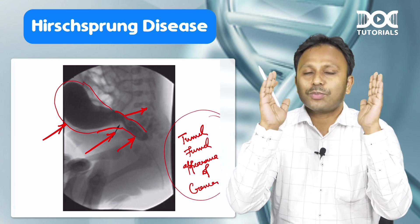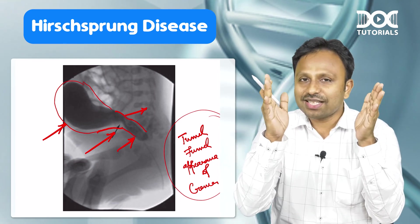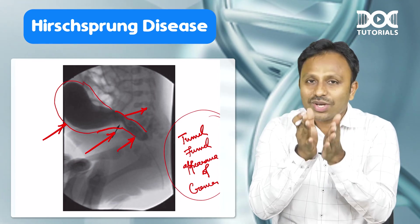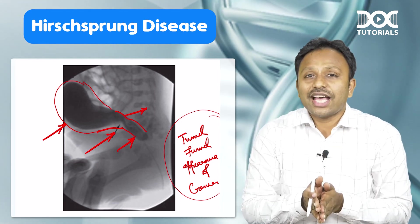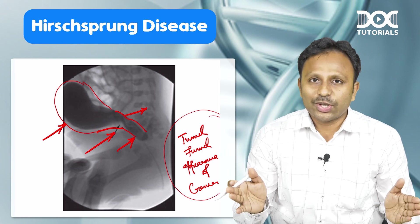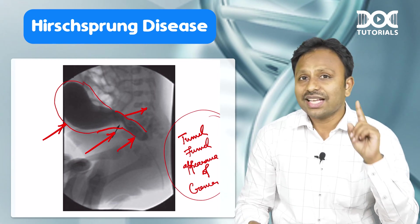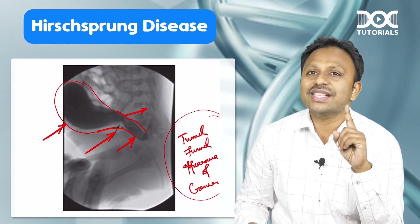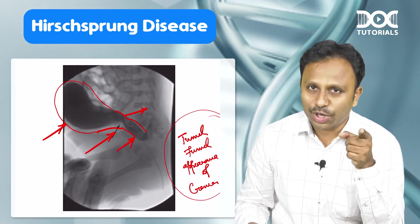So in Hirschsprung disease, barium enema is the investigation of choice, showing a proximal dilated segment, an intermediate transition zone, and a distal narrow aganglionated segment. The gold standard, however, is always rectal biopsy.